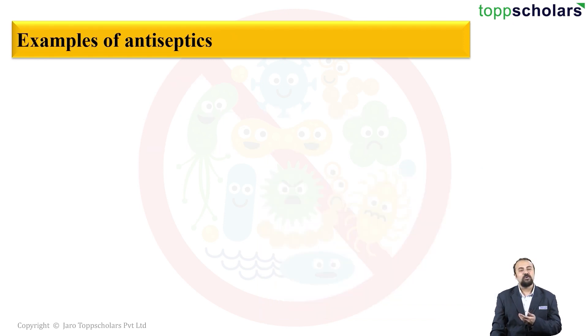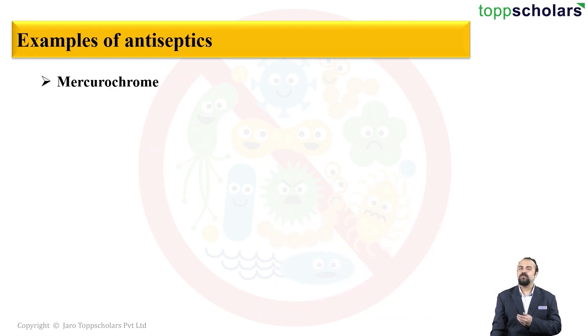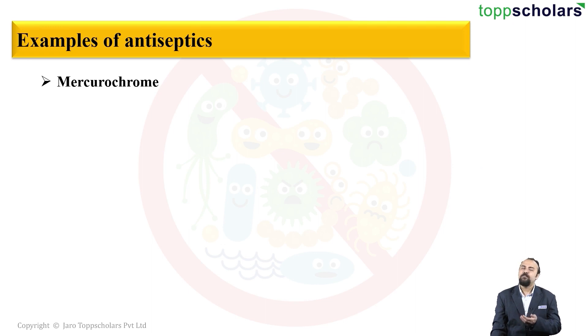Moving on, next we have something called mercurochrome, which is a very commonly used antiseptic in case of small cuts and abrasions.